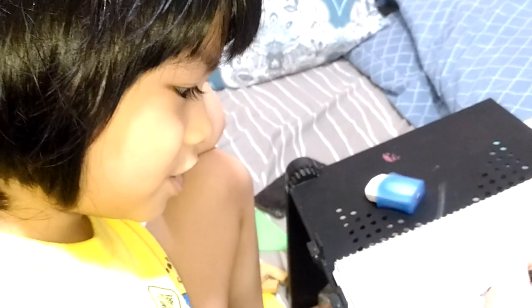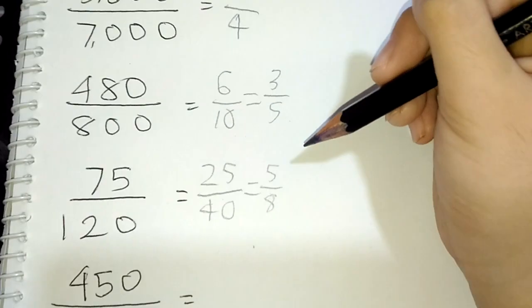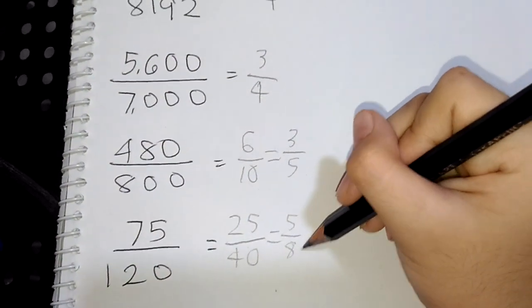Okay, I'll just write 25 over 40 here. The real answer will be 5 over 8.